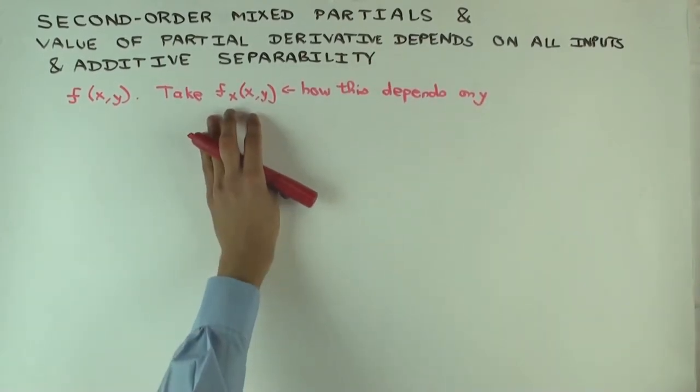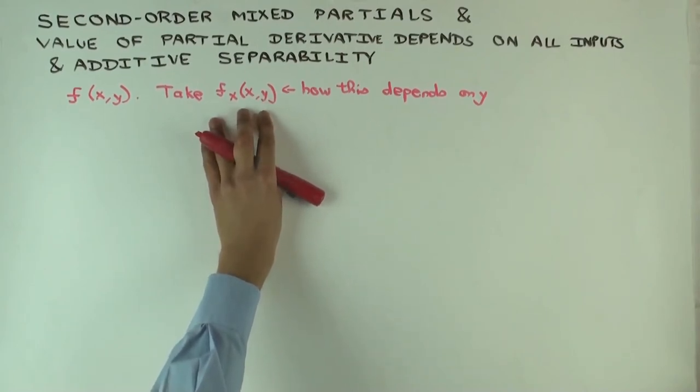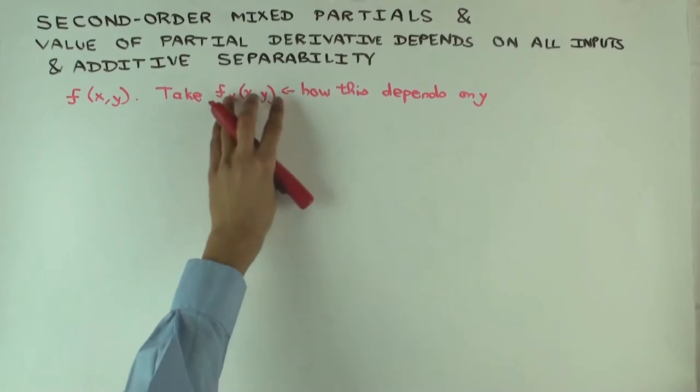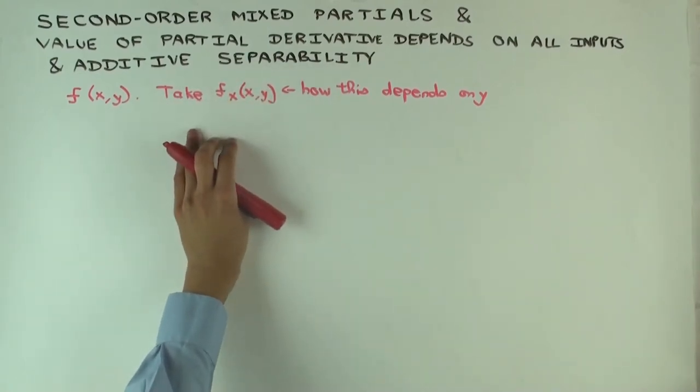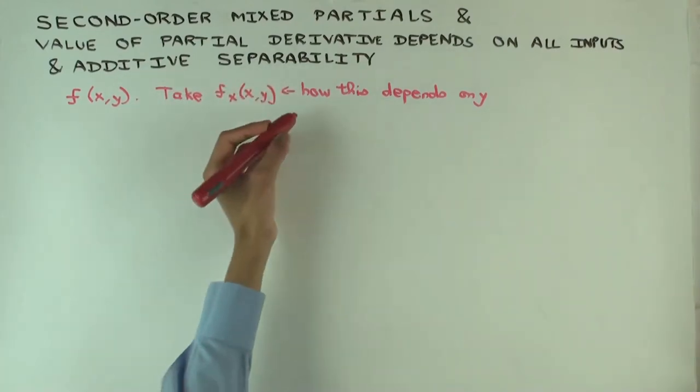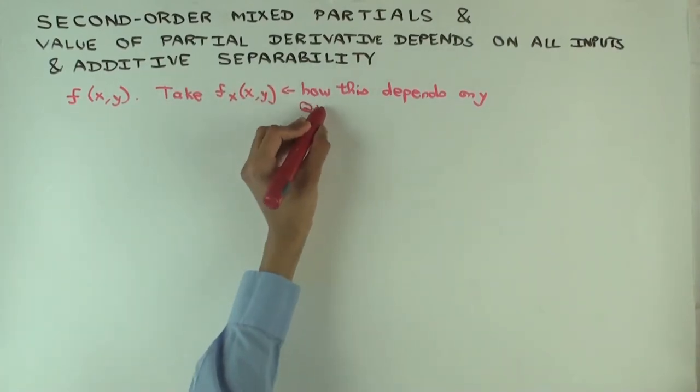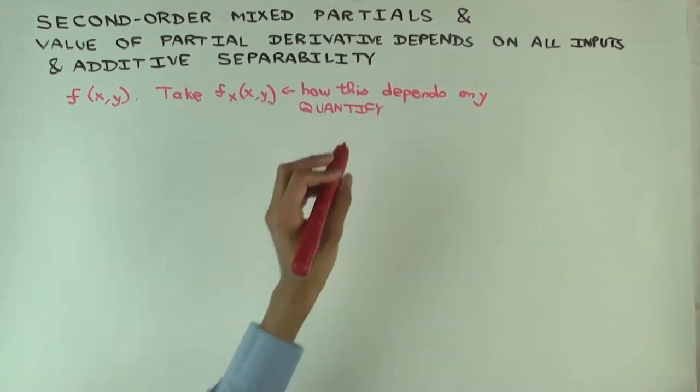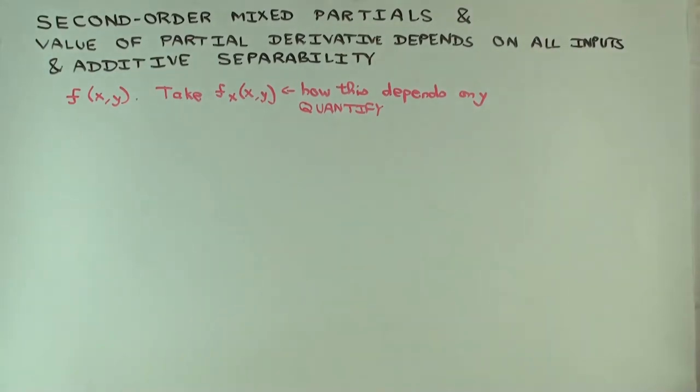Now, what's one extreme situation? An extreme situation is where it doesn't depend at all on y. So it's actually independent of y. And if that's not true, then that means it does depend on y, which means that if you change y, then the value of this changes. Now, how would you try to quantify the extent to which this depends on y? What would you use to quantify that? Mixed, second order mixed partial. So you take the second order mixed partial.